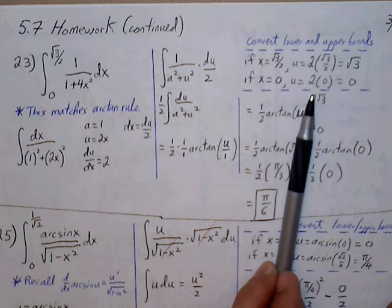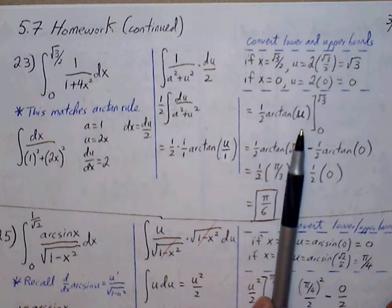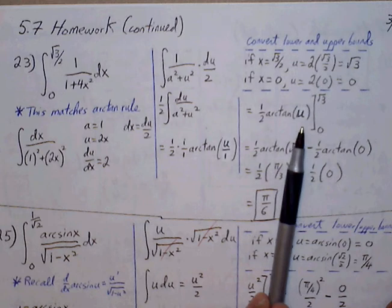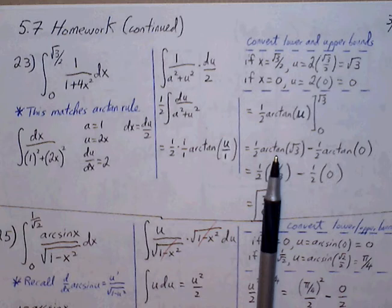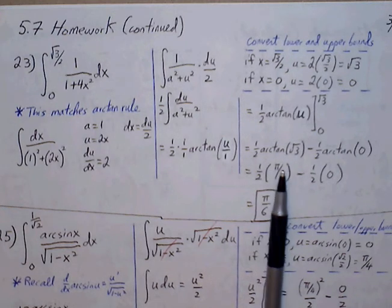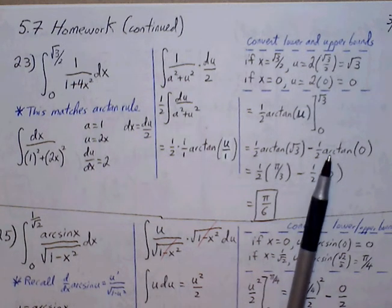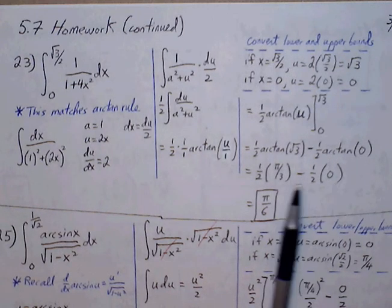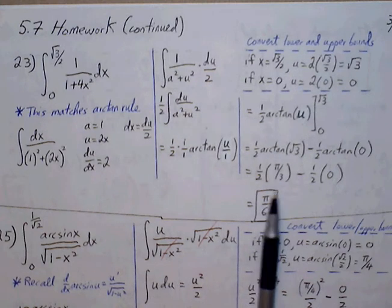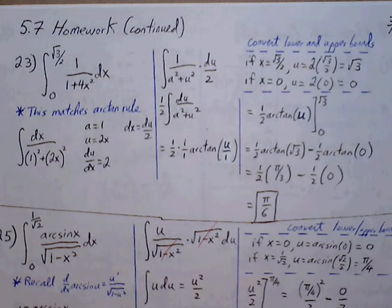Now we plug in the bounds: 1/2 times arctangent of √3 minus arctangent of 0. Arctangent of √3 — when is tangent equal to √3? That's at π/3. Arctangent of 0 — tangent equals 0 at 0. So we have 1/2 times π/3, which is π/6, minus 0. So we are simply left with π/6.